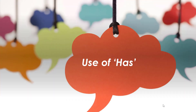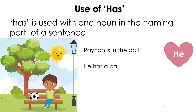Let's learn where we should use 'has.' Listen carefully — 'has' is used with one noun in the naming part of the sentence. One noun means a singular noun. Look at the picture: it says 'Rehan is in the park,' and below that, 'He has a ball.' When we use the pronoun 'he,' we use 'has.'